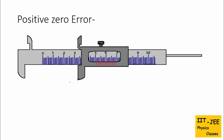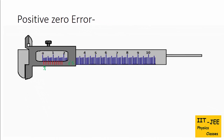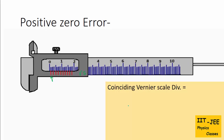The second case: when we bring the two jaws together, the zero of the vernier scale is ahead of — or to the right of — the main scale zero. This is called positive zero error. To calculate it, we first need to find the coinciding vernier scale division — the vernier scale division which coincides perfectly with any main scale division.